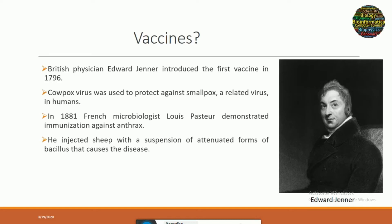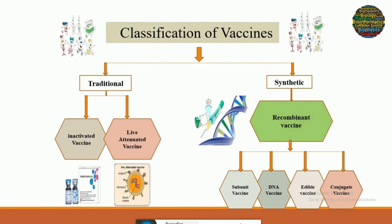Louis Pasteur used attenuated forms of Bacillus anthracis to provide immunity against the disease, and then four years later he developed a protective suspension against rabies virus. So we have different types of vaccines that include the traditional vaccines and the synthetic vaccines.